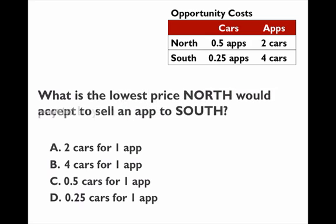How much is the lowest price the North will accept from the South in order to sell an app? It's the same idea. The North has to pay two cars to produce one app, so they have to charge the South something higher than two cars to make any gains on the transaction. If the North charged just one car for an app, they'd be giving up two cars to produce it and only getting one car back. So the North has to ask for at least more than two cars for one app — the lowest price is two cars, and that's answer A.